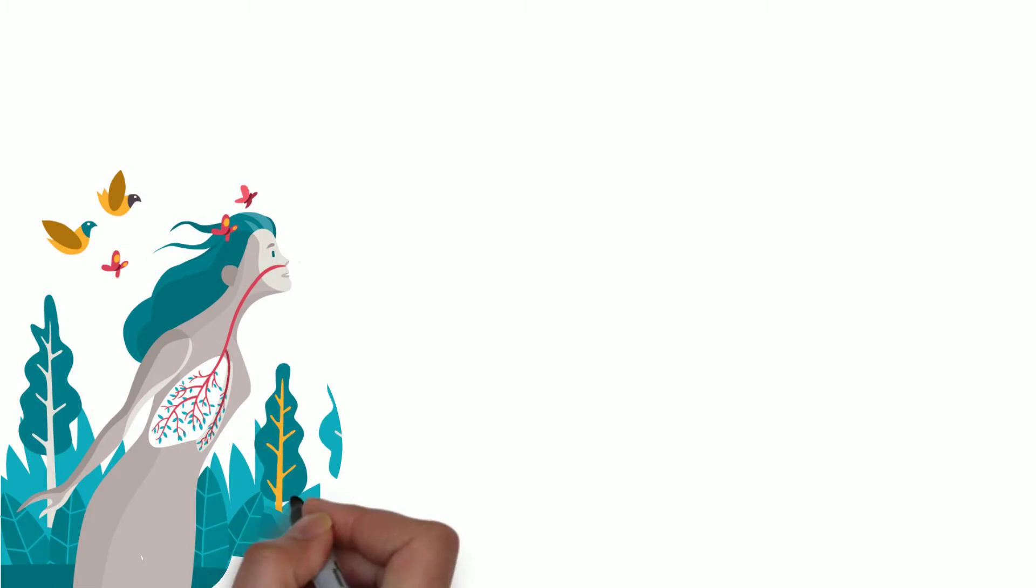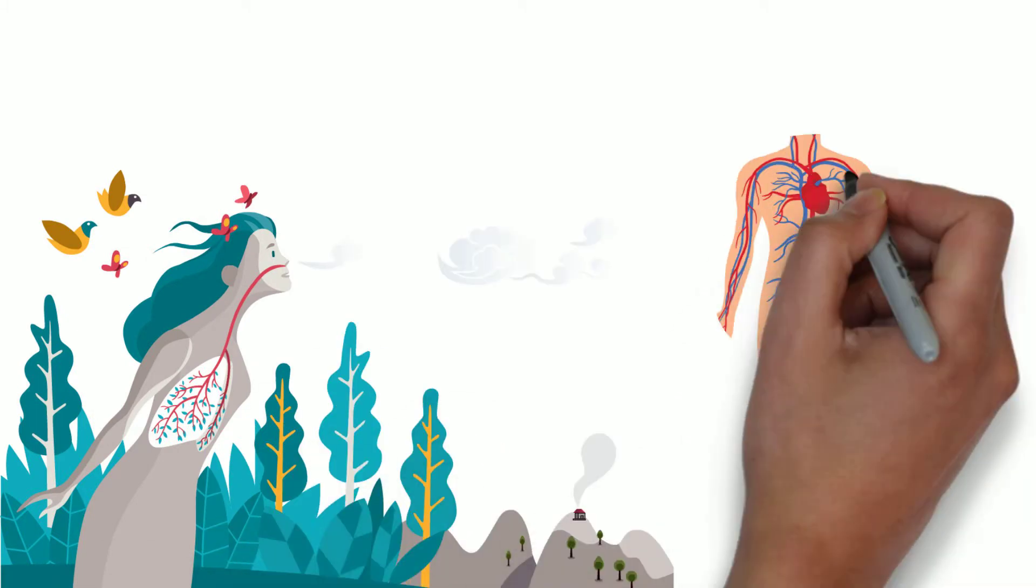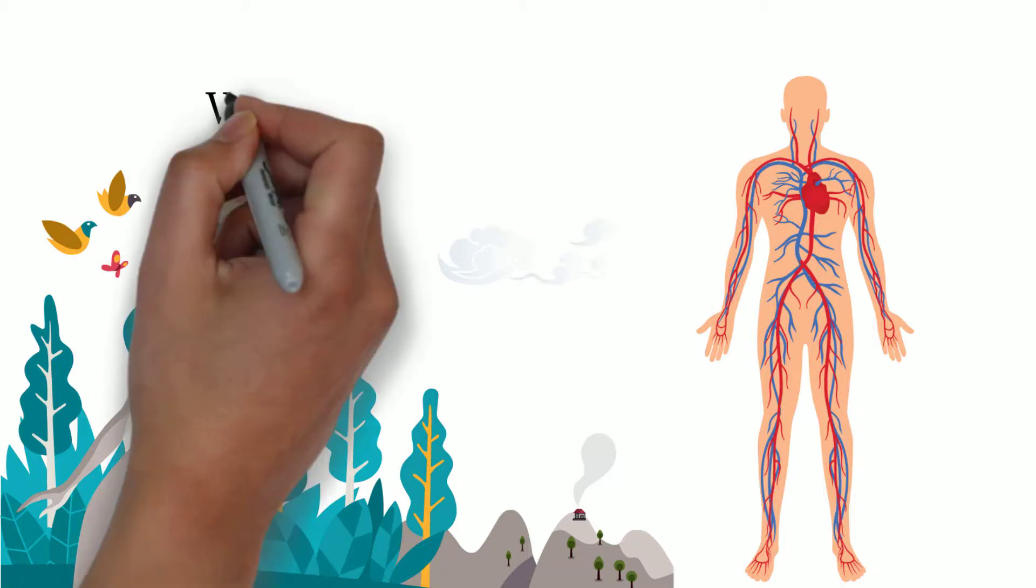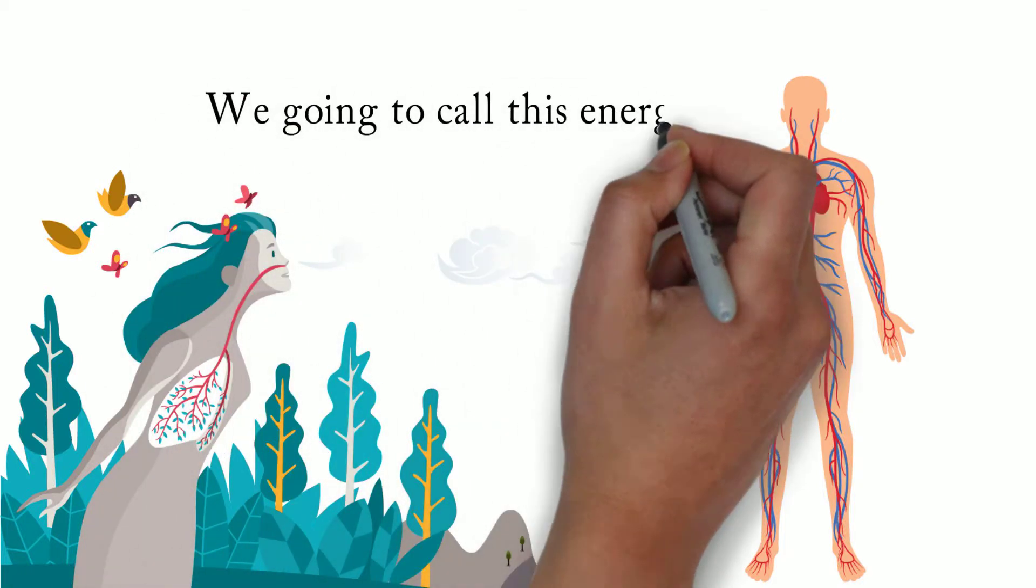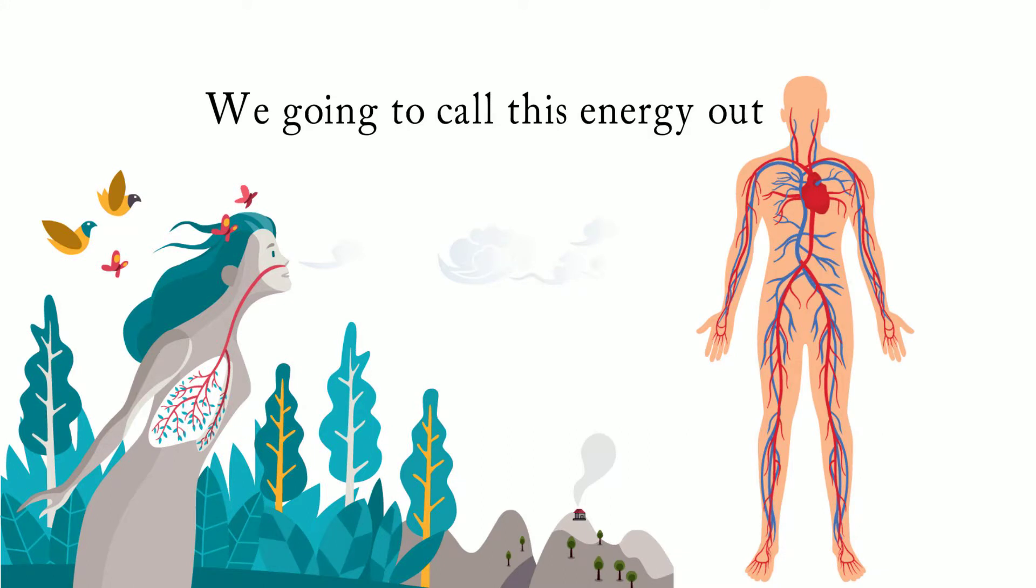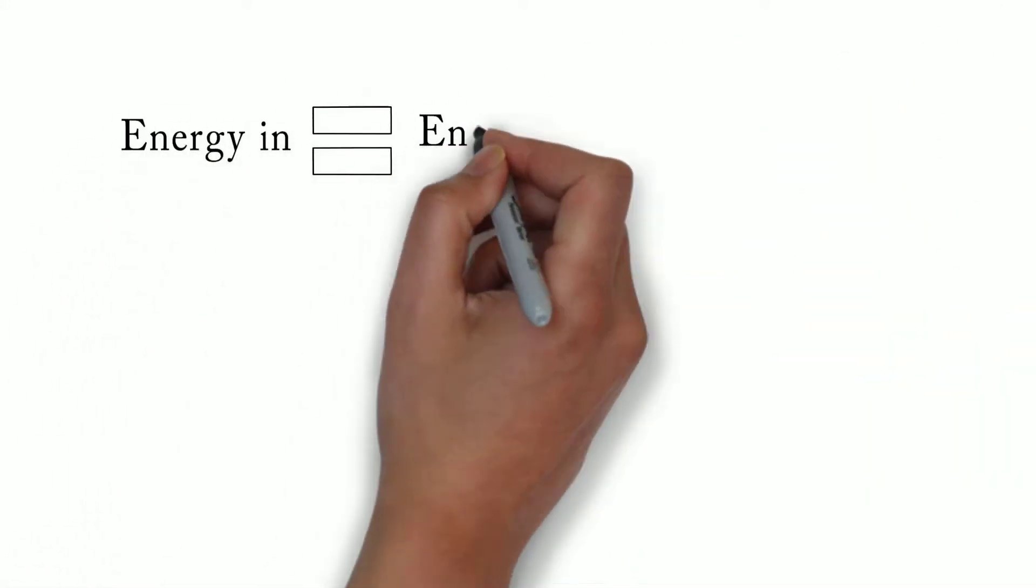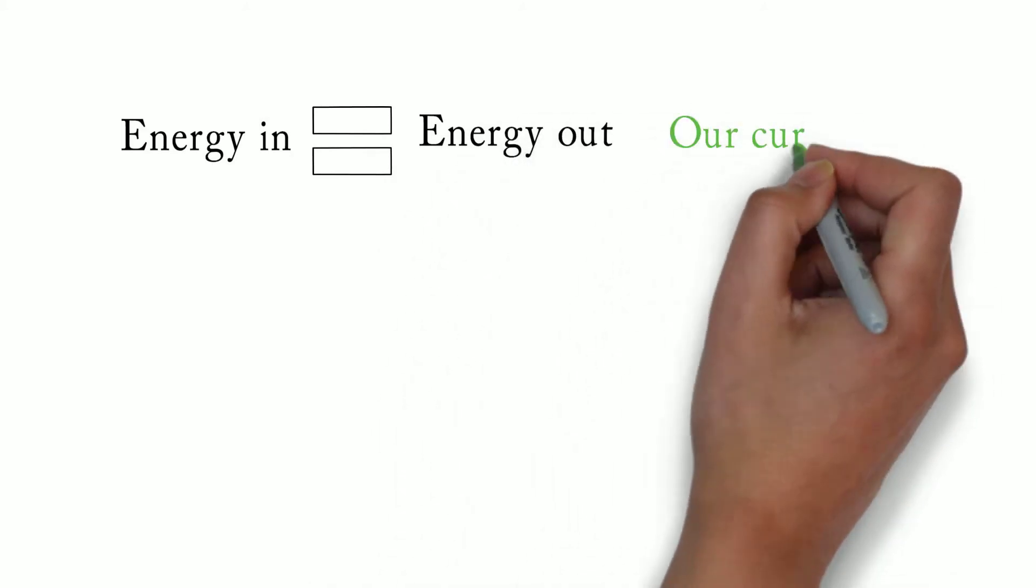The body uses this energy for breathing, circulating blood, maintaining body temperature and many other functions to keep us alive. We're going to call this energy out. So simply, if our intake of energy is equal to our energy out, then we'll maintain our current weight.